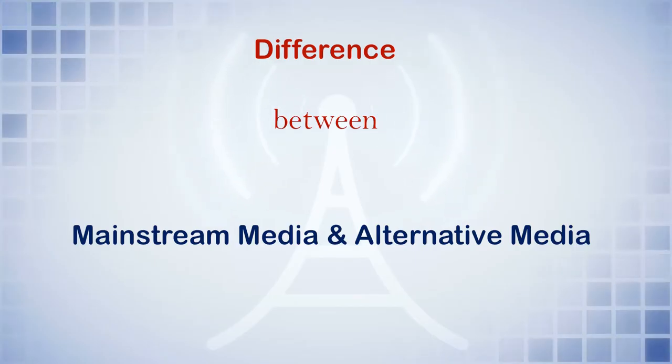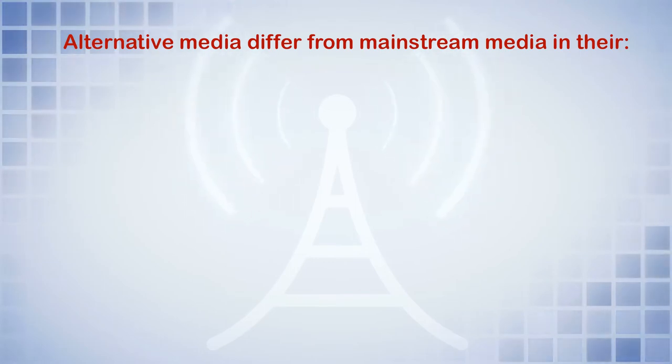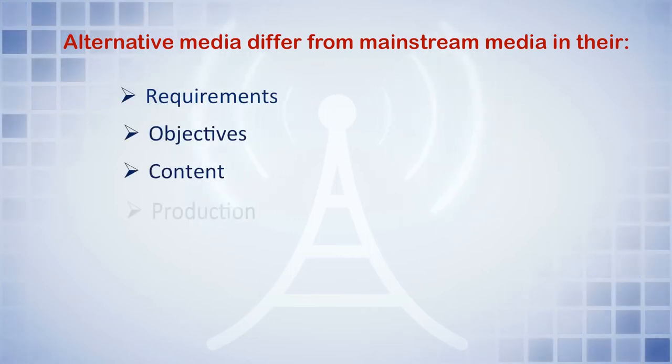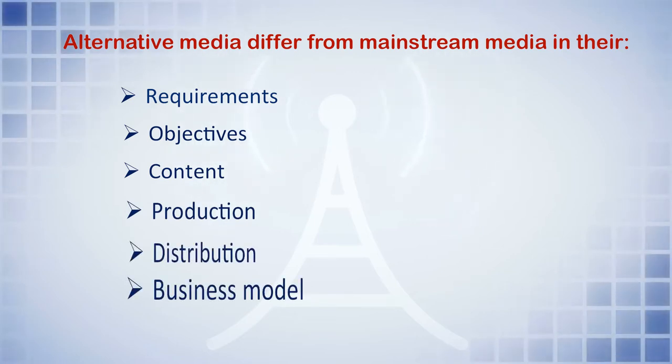So that is the definition of alternative media. Now we will discuss the differences between mainstream media and alternative media. These differences span several areas: requirements, objectives, content, production, distribution, and business model. We will see the differences in all these fields one by one.